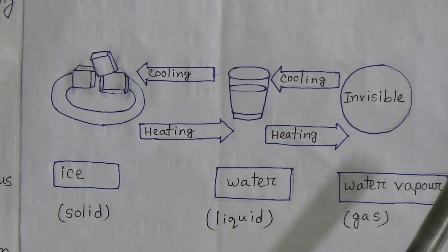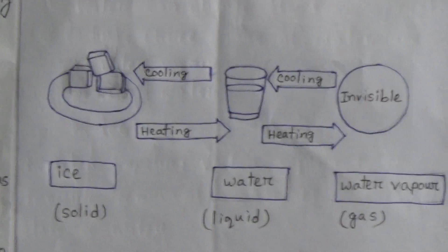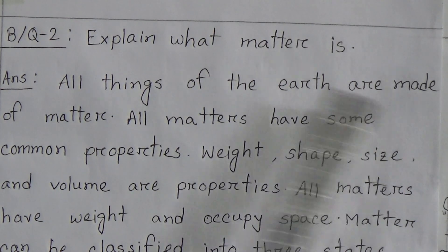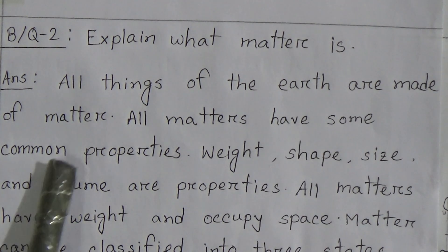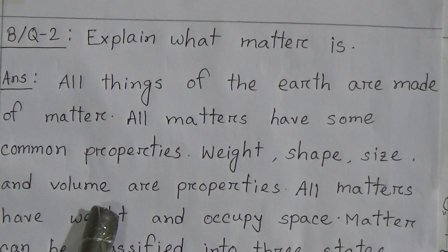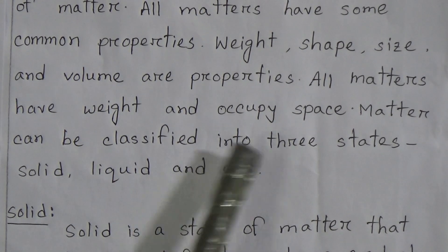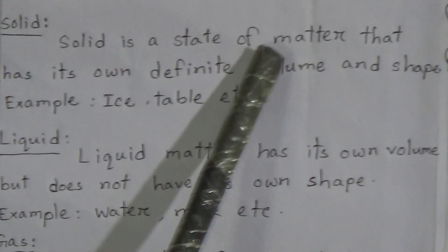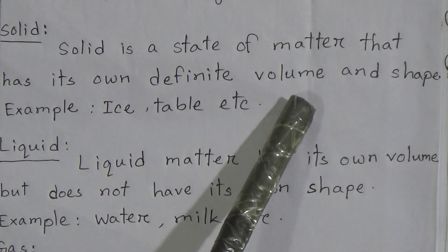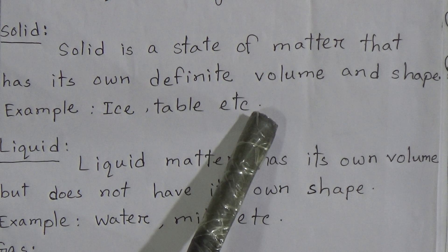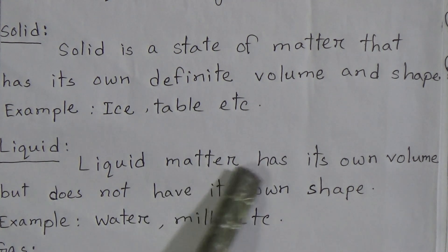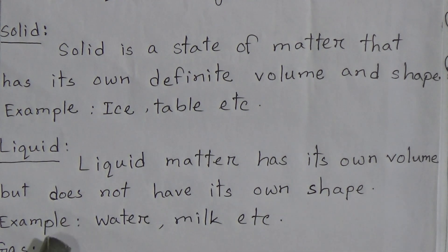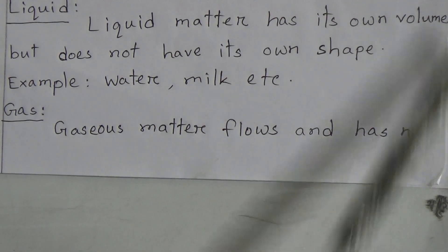Broad question number two: explain what matter is. Answer — all things of the earth are made of matter. All matters have some common properties: weight, shape, size, and volume. All matters have weight and occupy space. Matter can be classified into three states: solid, liquid, and gas. Solid is a state of matter that has its own definite volume and shape — example: ice, table, etc. Liquid matter has its own volume but does not have its own shape — example: water, milk, etc.